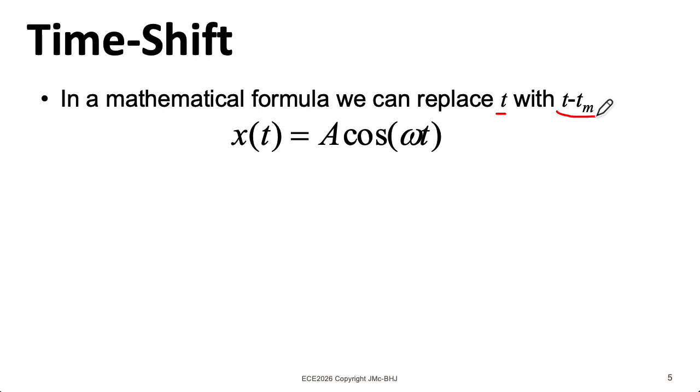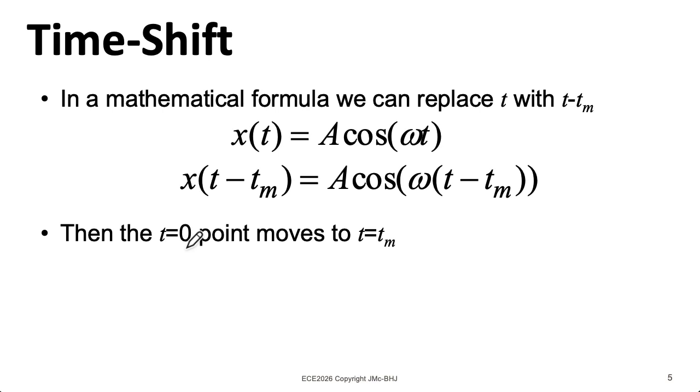If we apply this to a cosine, we can apply the shift like this. When you shift a function, whatever is happening at t equals 0 moves to tm. Because you can imagine plugging tm here for t, and these things would zero out.